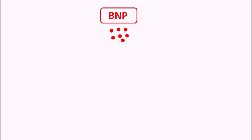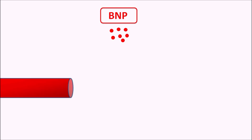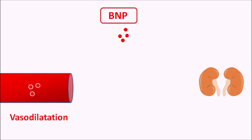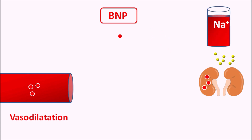BNP has two important targets: vascular smooth muscle and the renal system. BNP acts on vascular smooth muscle to produce vasodilation, and it acts on the renal system to increase excretion of sodium. Both vasodilation and increased sodium excretion can reduce cardiac work by reducing body volume as well as blood pressure, which improves the symptoms of heart failure.